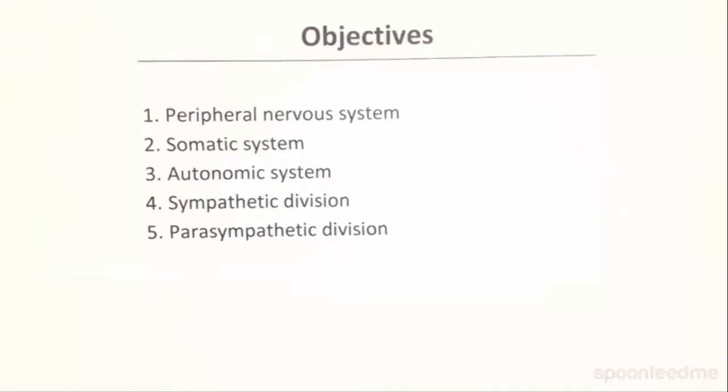Hey guys, so basically in our body we've got two basic types of systems, the peripheral nervous system and the central nervous system, which is the brain and the spine.